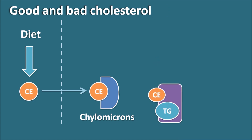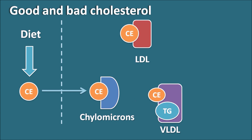Another lipoprotein is VLDL, which can transport both cholesterol and triglycerides; VLDL is rich in triglycerides compared to cholesterol. Another lipoprotein is LDL, which is only rich in cholesterol and does not have significant amounts of triglycerides. Finally, HDL is also rich in cholesterol. These lipoproteins are classified based on their density: LDL is the low density lipoprotein, HDL is the high density lipoprotein, and VLDL is the very low density lipoprotein.